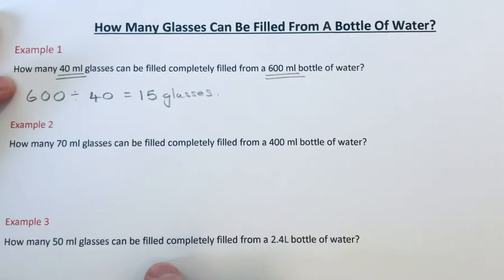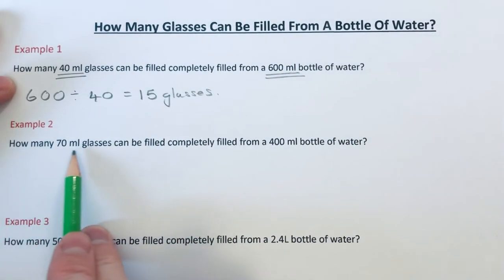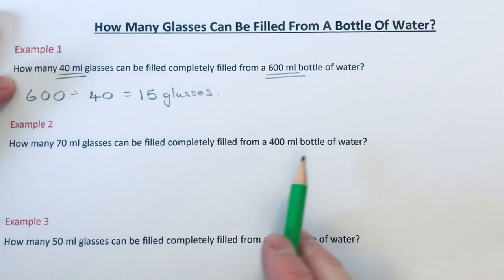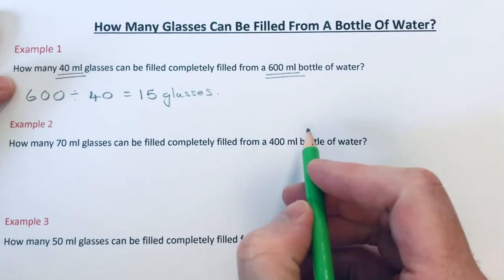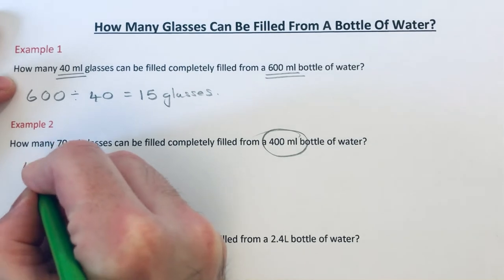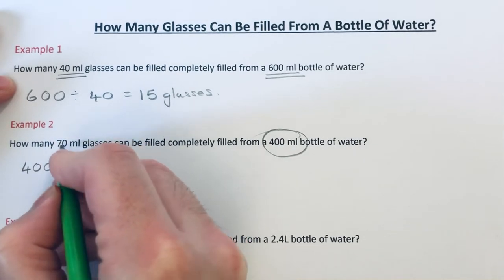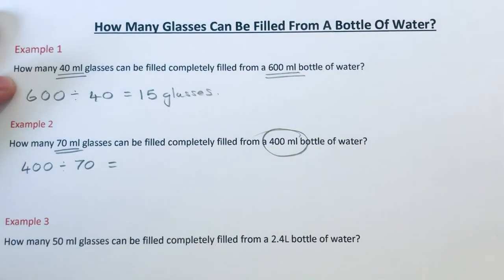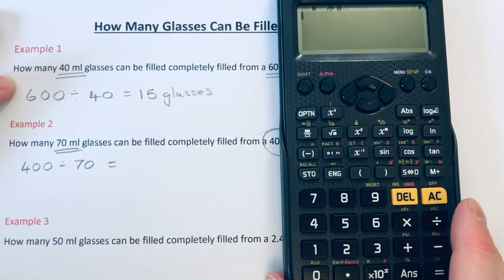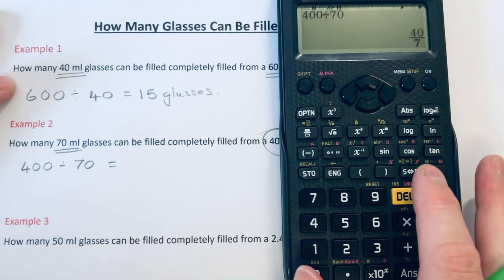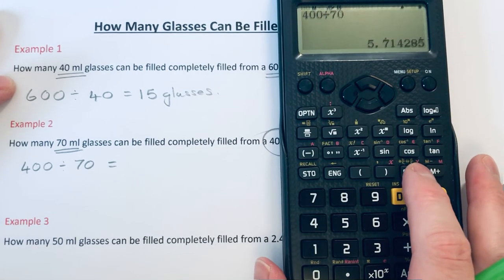Let's move on to the second example. How many 70 milliliter glasses can be filled completely from a 400 milliliter bottle of water? Again, we just need to divide the volume of the bottle, which is 400, by the volume of the glass. Let's put this on a calculator: 400 divided by 70...